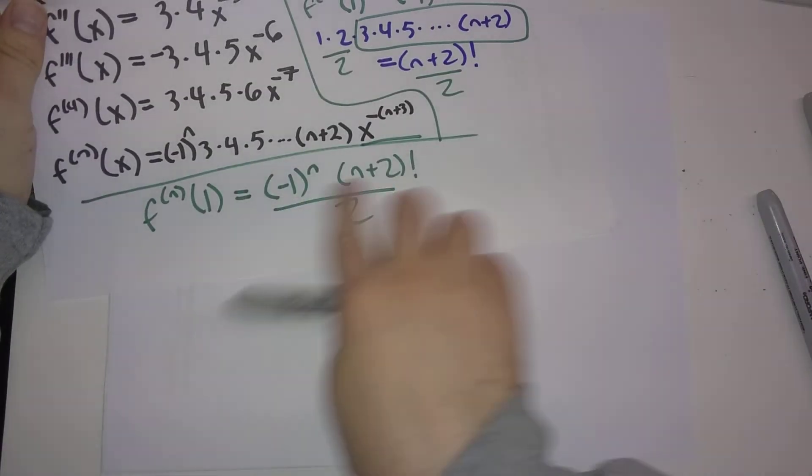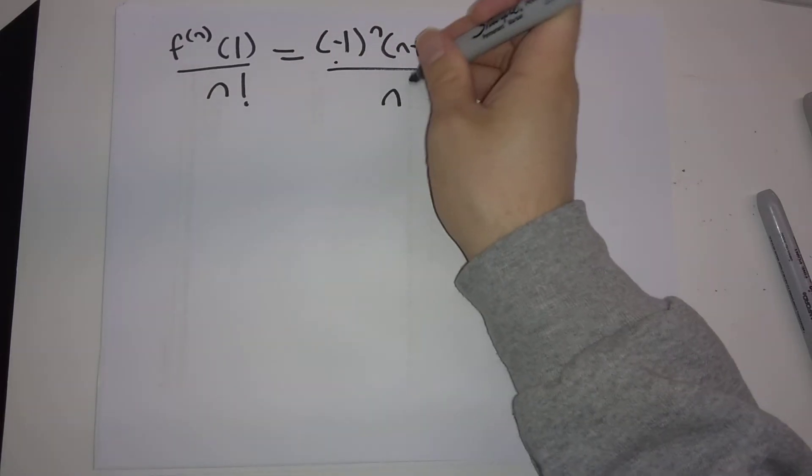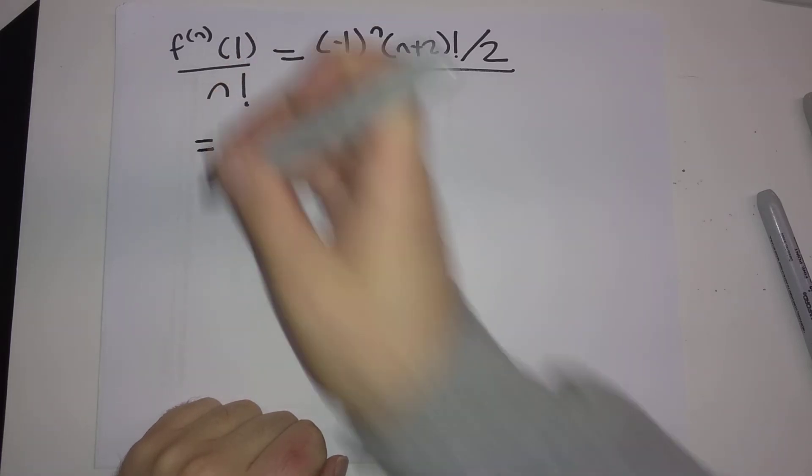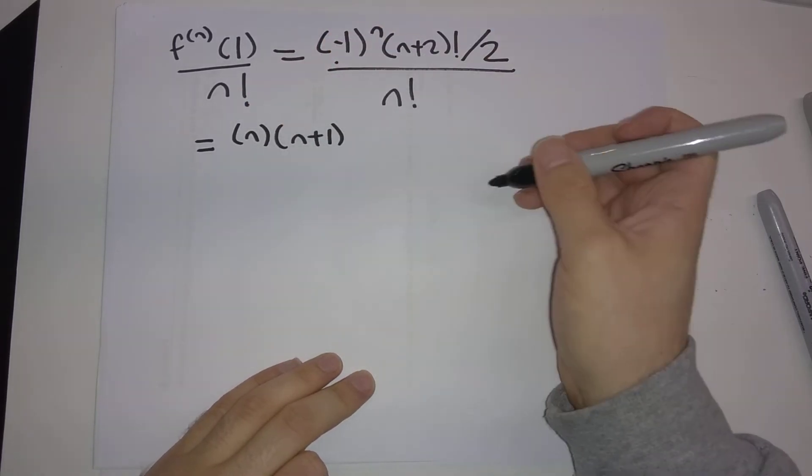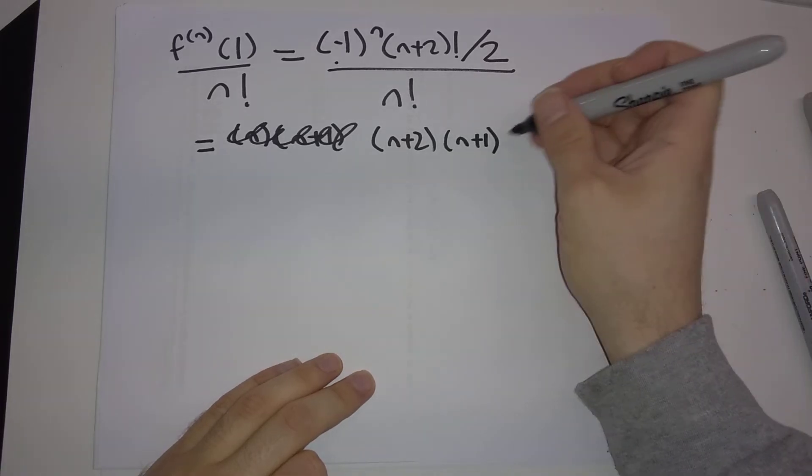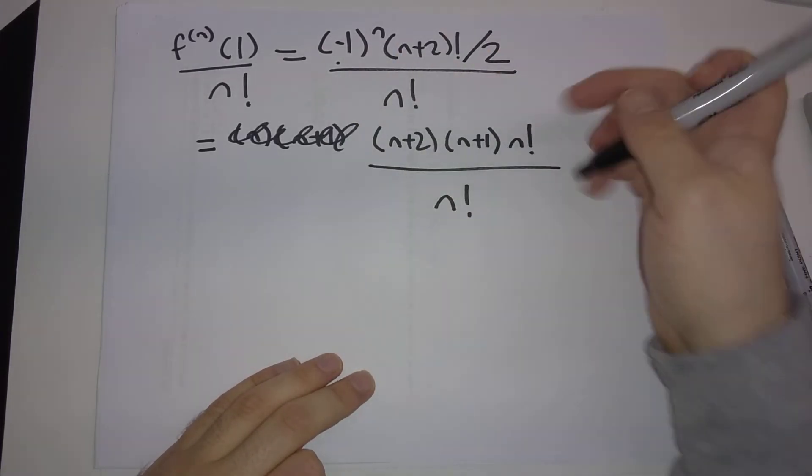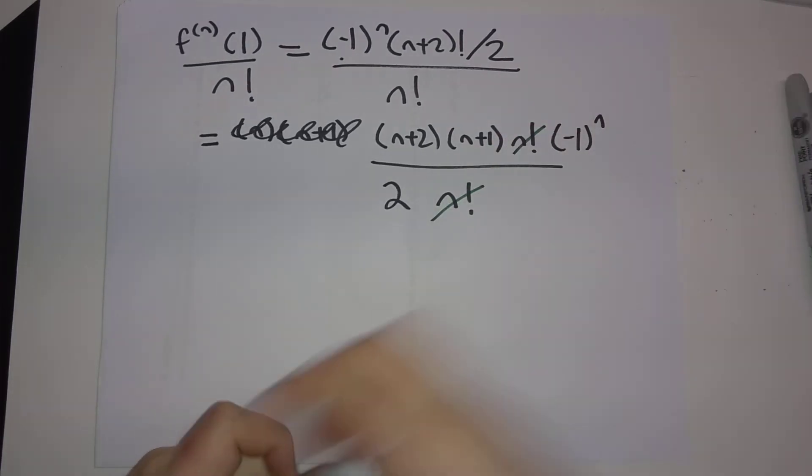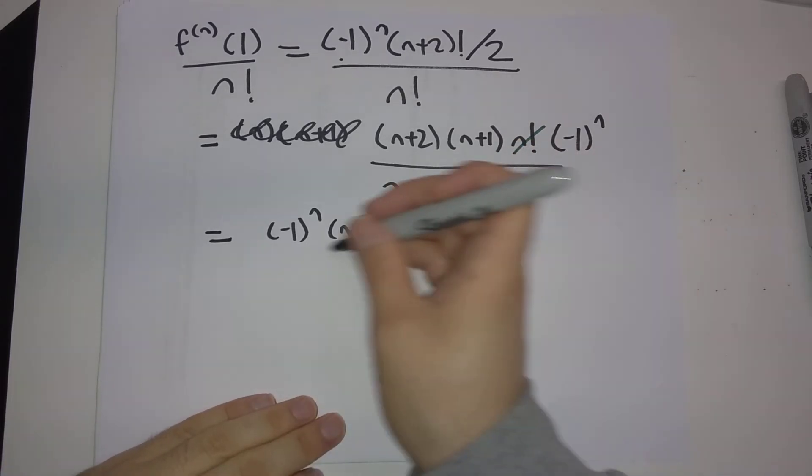So, from before, this is minus 1 to the n times n plus 2 factorial divided by 2, and downstairs we have n factorial. Okay, so we've got an n plus 2 factorial upstairs, we have an n factorial downstairs. We should think about, this is, you know, think back to ratio test, we should think about if we can rewrite this so things cancel. Sure enough, n plus 2 factorial, we can peel off n plus 2 and n plus 1 to get an n factorial. So, n plus 2 factorial is this, n factorial is this. I also need to write down minus 1 to the n and divide by 2. And so cancel, cancel. What are we left with here? Minus 1 to the n times n plus 1 times n plus 2 divided by 2.